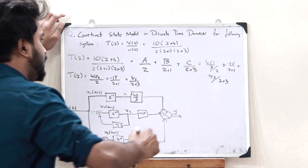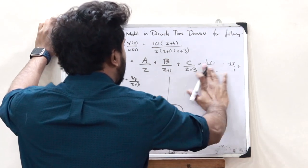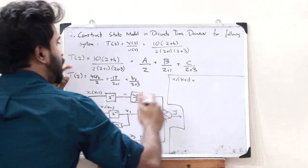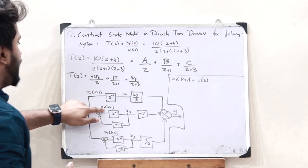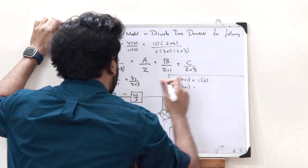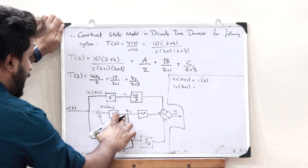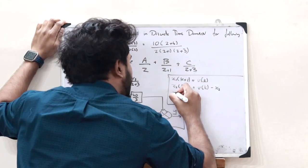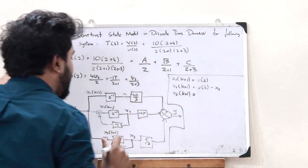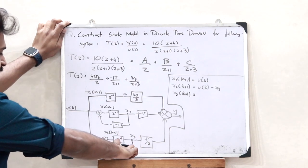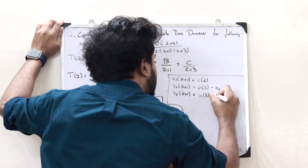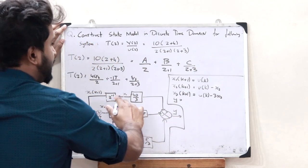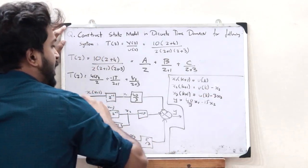Now, analyzing the block diagram, we write the state equations. X1(K+1) = U(K). X2(K+1) = U(K) − X2(K). And X3(K+1) = U(K) − 3·X3(K). The output equation is Y = (40/3)·X1 − 15·X2 + (5/3)·X3.